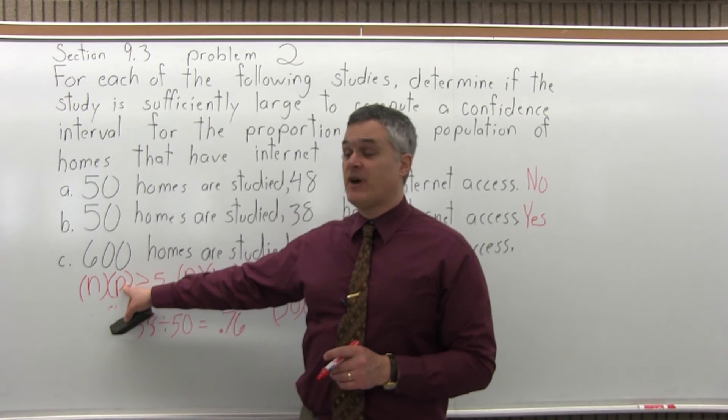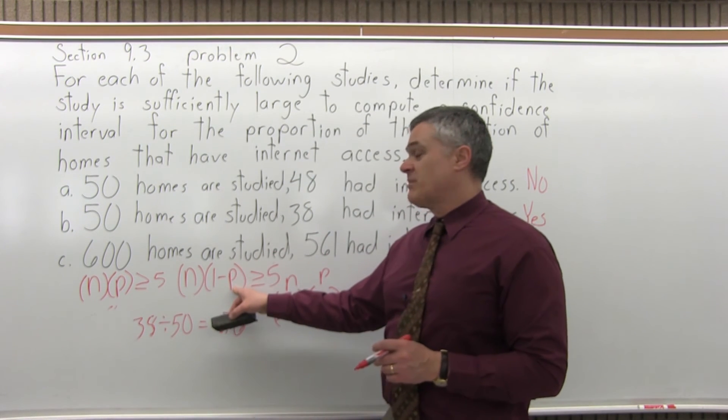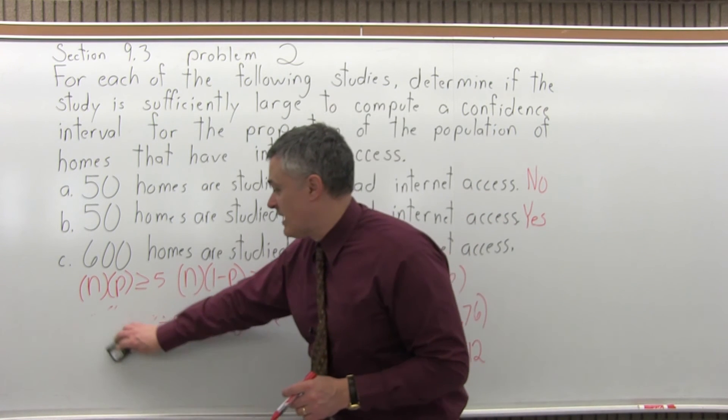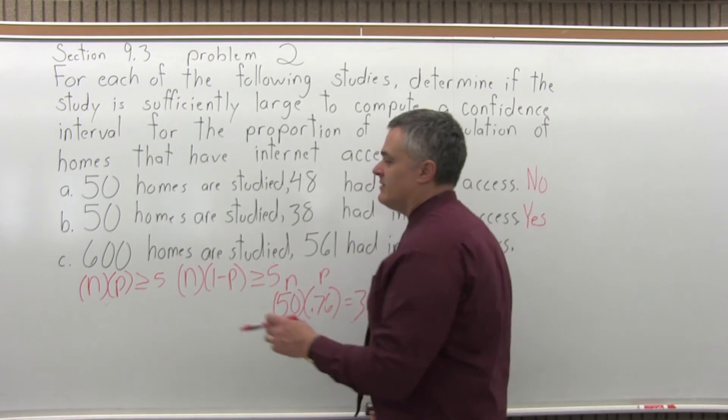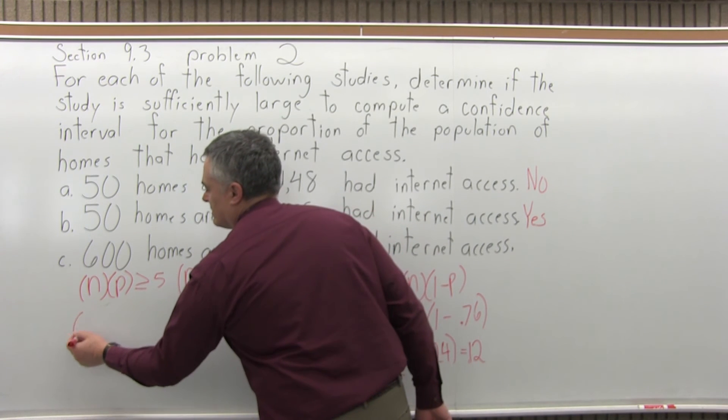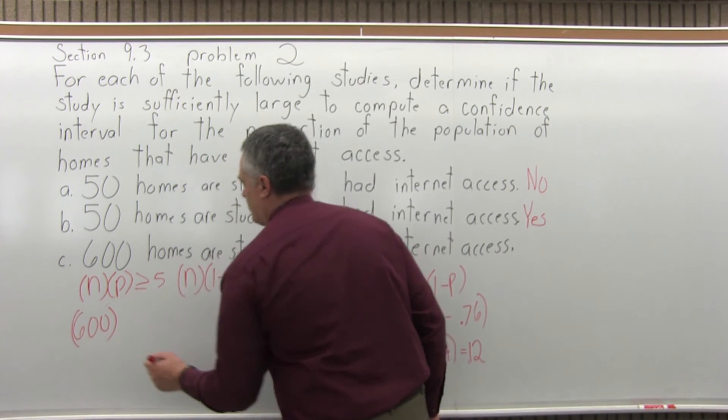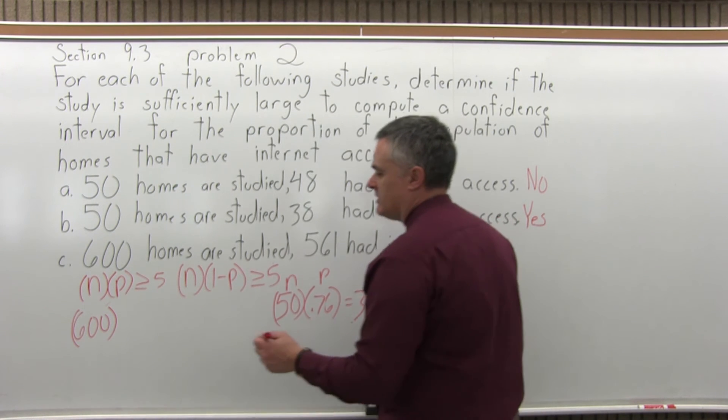So, let's determine the same type of things. Is n times p at least 5? And n times 1 minus p, is that also at least 5? So, for part c, the n is the 600. The p, oh, I have to figure out the p.